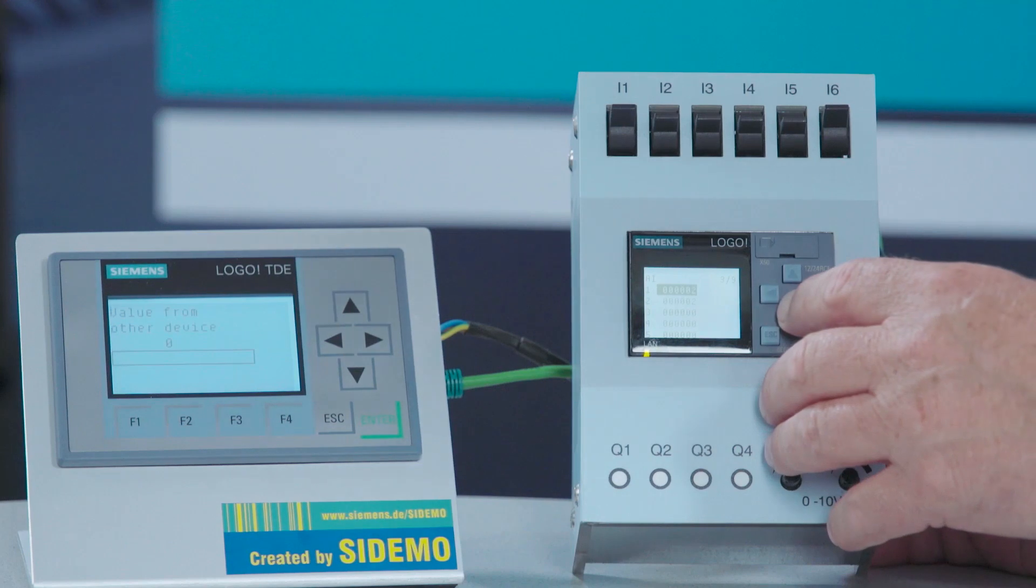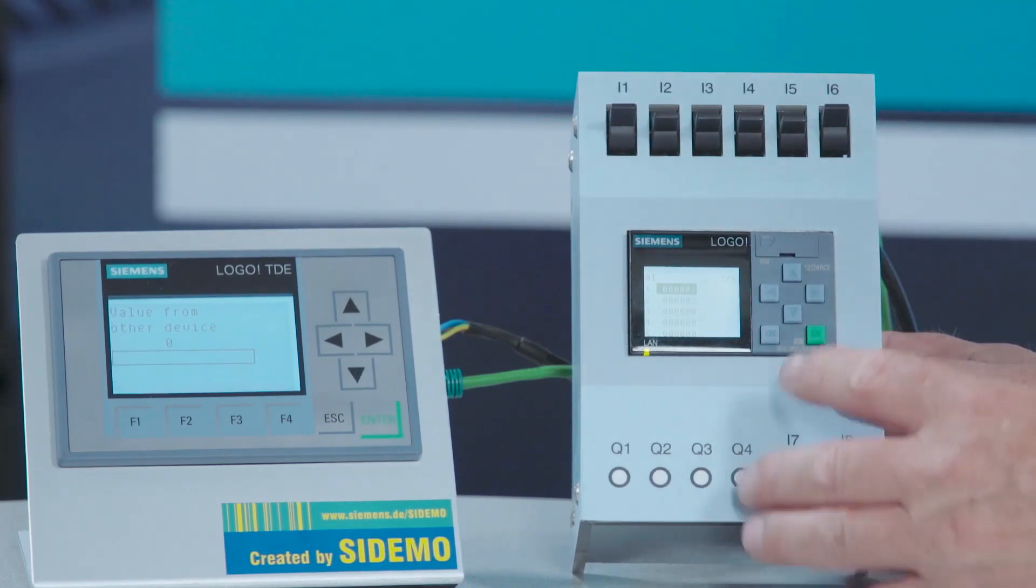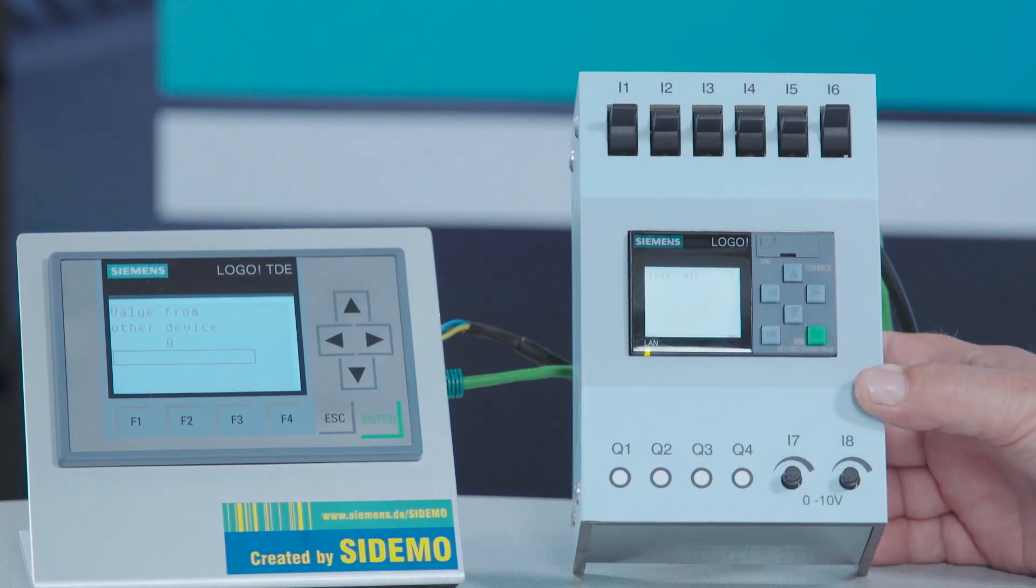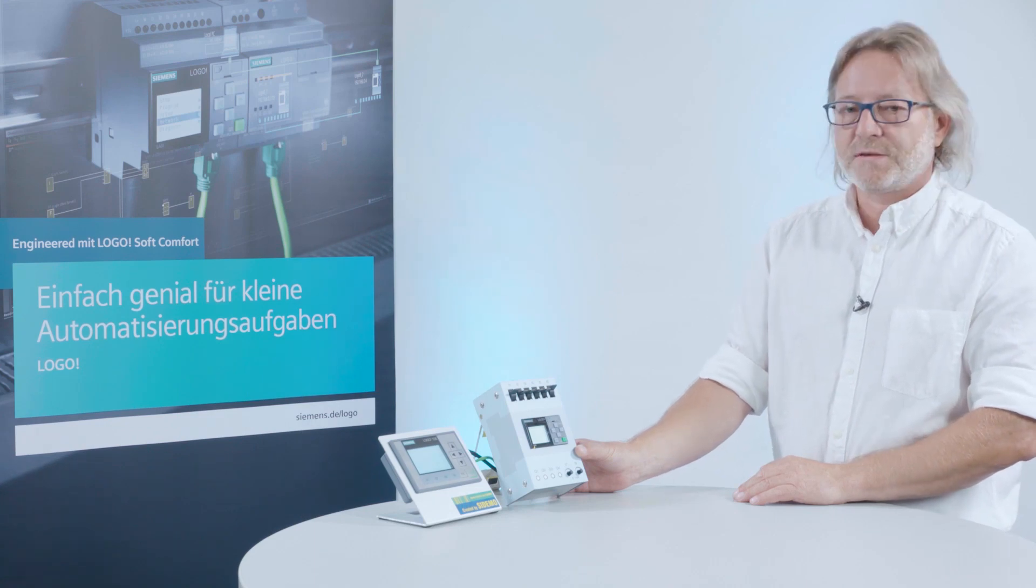I can now select the relevant inputs using the arrow up and arrow down buttons and confirm my selection with OK. Now the selected channel is shown as a trend view on the display.